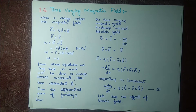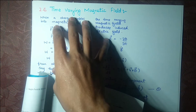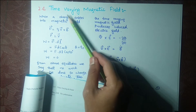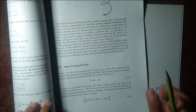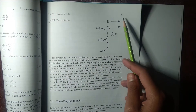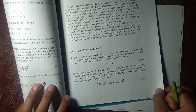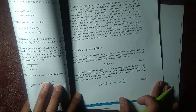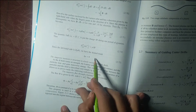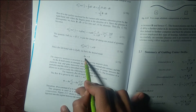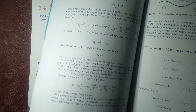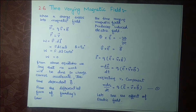Welcome back to Learning Daily Physics. Today we are starting topic 2.6 from F10: time-varying magnetic field. This is F10 page 39. The topic is 2.6 time-varying magnetic field, and what we are going to do today is derive this equation and prove that mu is constant for the time-varying magnetic field.